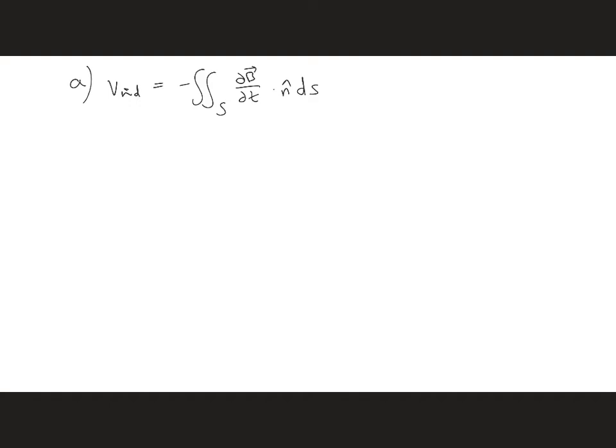And also b doesn't change spatially with s. We can just evaluate this as minus a, the area of the loop, times db dot n hat dt.